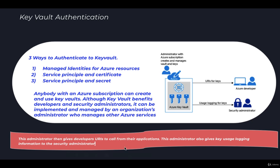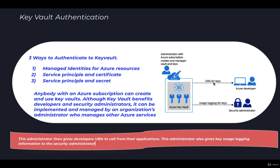The administrator also monitors all operations happening on the Key Vault. Once this is done, the administrator gives developers a URI for the keys — so the keys themselves are not given directly, but rather the Uniform Resource Identifier is shared. This URI is used by the Azure developer to actually access the secrets or keys from the Key Vault. The administrator also gives key usage logging information to the security administrator, covering what operations are happening and who accesses the Key Vault.